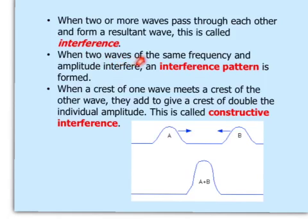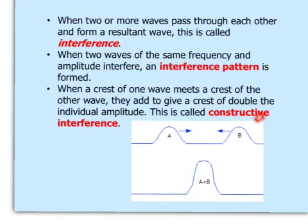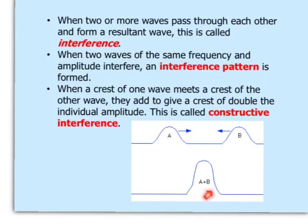When two waves of the same frequency and the same amplitude interfere, you get an interference pattern. When a crest of one wave meets a crest of the other wave, they add to give a crest of double the individual amplitude. This is called constructive interference. These two identical waves interfere constructively — they add up to each other, and the resultant amplitude is twice as big as the individual ones.